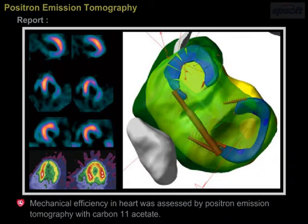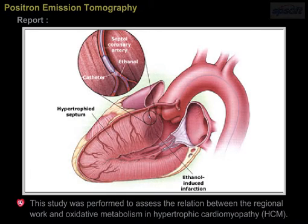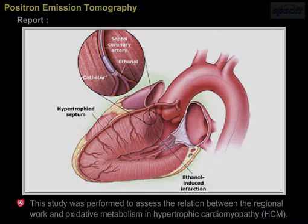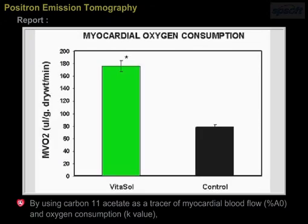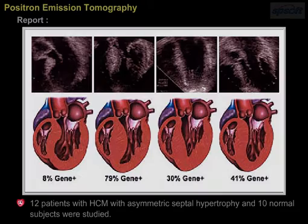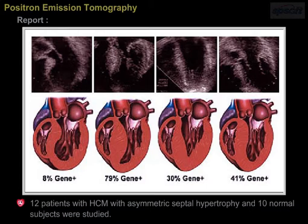Report: Mechanical efficiency in the heart was assessed by positron emission tomography with carbon-labeled acetate. This study was performed to assess the relation between regional work and oxidative metabolism in hypertrophic cardiomyopathy (HCM). By using carbon-labeled acetate as a tracer of myocardial blood flow, percent A0 and oxygen consumption K-value, 12 patients with HCM with asymmetric septal hypertrophy and 10 normal subjects were studied.